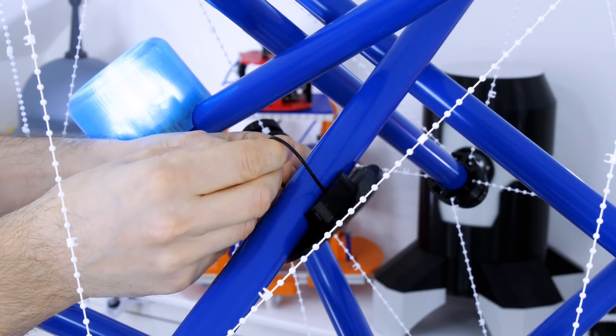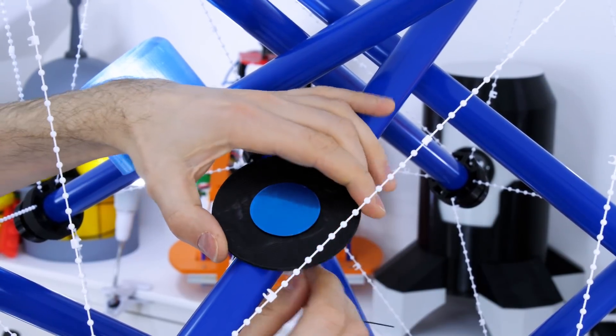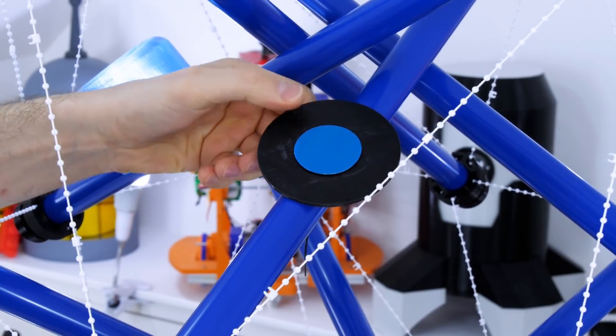These get zip tied onto the structure wherever I want them, and due to the fact there's only one zip tie and the sticks are smooth I can move those all around and position them, but I can also tension them up so they're pretty tight and stay in place.